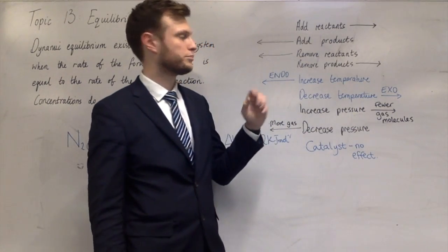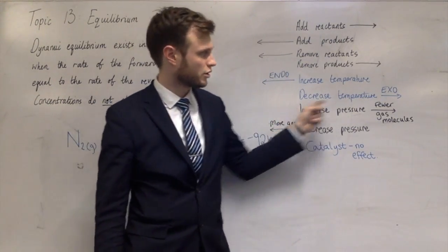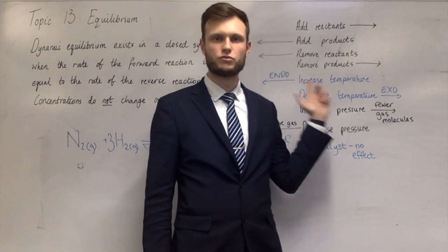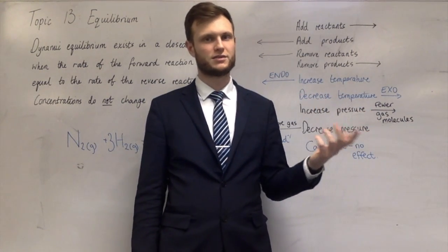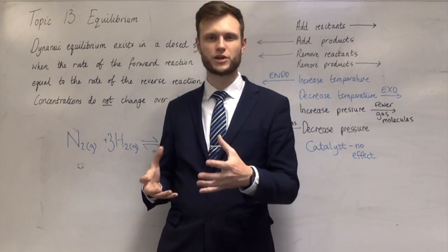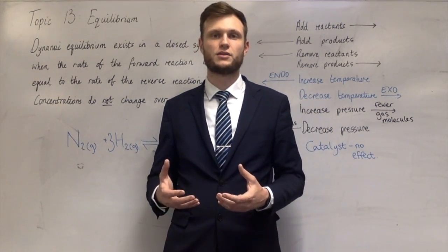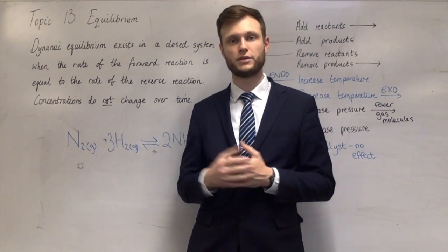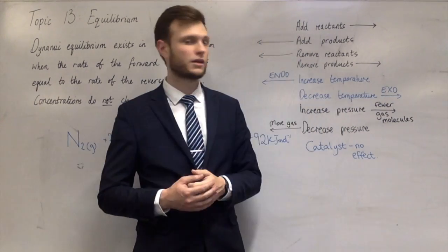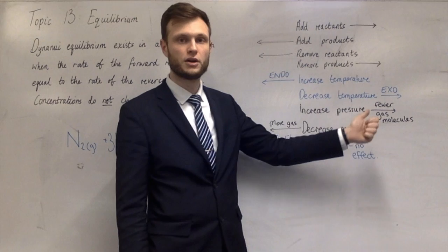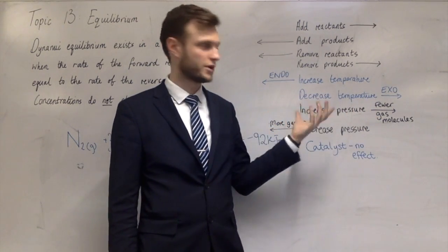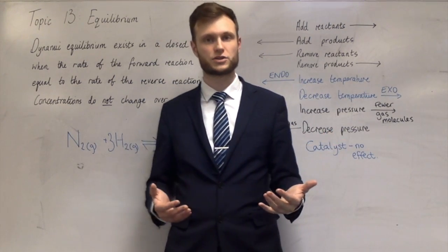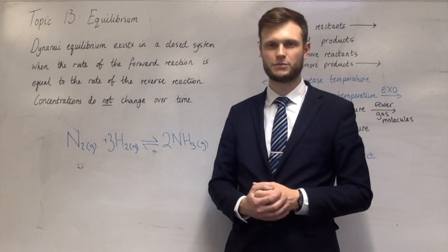Other compromises made are with pressure. Increasing the pressure pushes the reaction to the right-hand side, which makes more products — but they don't increase the pressure extremely high because high pressure is dangerous and expensive; you'd have to buy all the high-pressure equipment. So they use a high pressure, but not a ridiculously high pressure. In another reaction where increasing the pressure would push in the opposite direction, you'd still use quite high pressure because that increases the rate of the reaction.